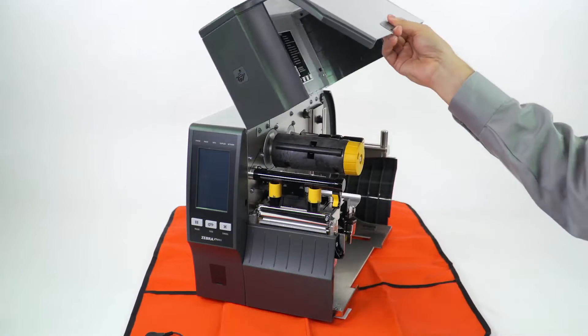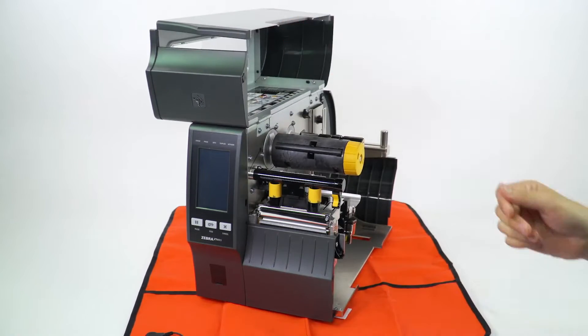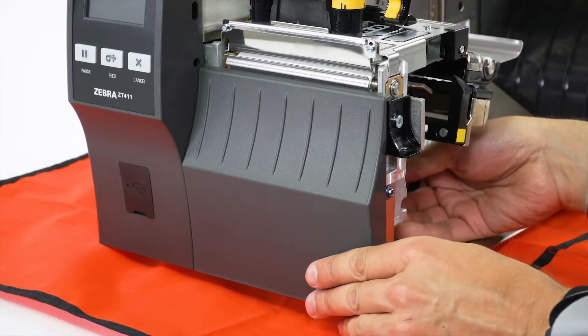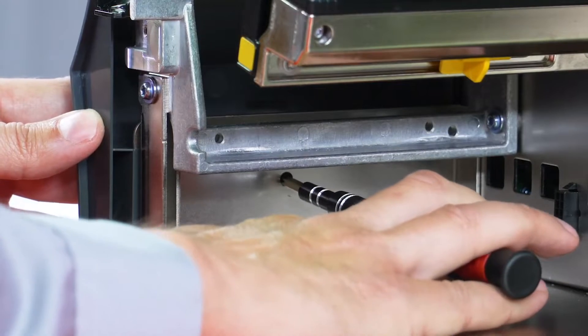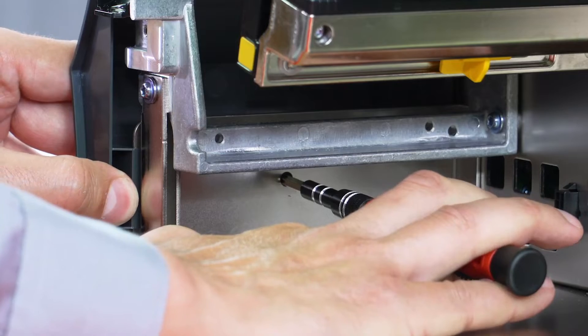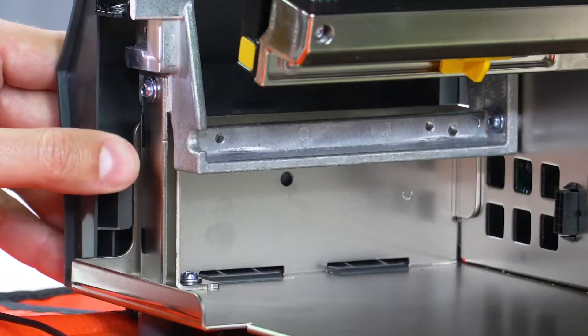Open the media door. Remove any media and ribbon. To remove the front panel, press on the detent buttons, then slide the panel to the side, tip it forward and release from the printer.